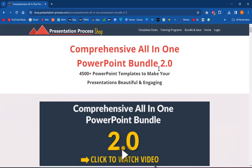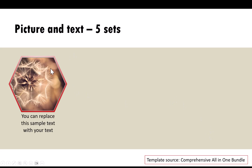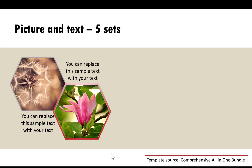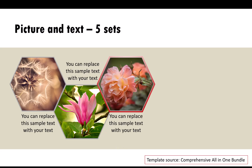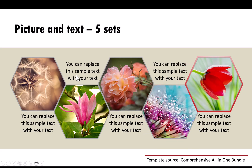Now let me show you some example templates from our comprehensive all-in-one PowerPoint bundle that use the same technique. Here I can show how we can use picture and text to move the viewer's attention across the various points. We have the first picture revealed with the explanation, then the focus is brought to the next point and the second picture is revealed, then the focus shifts to the next one, and finally to the last one. These pictures can easily be replaced with any specific pictures you already have on your computer.